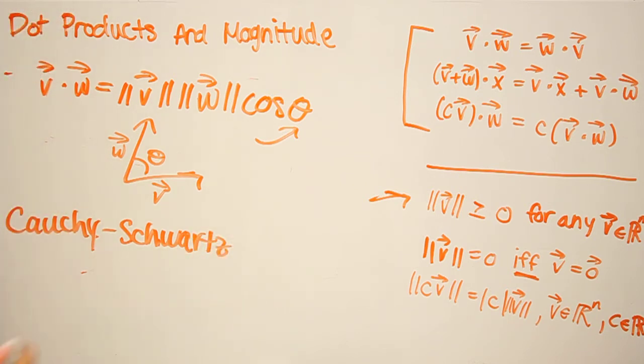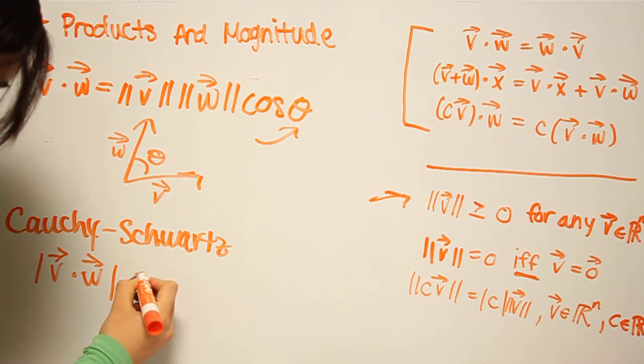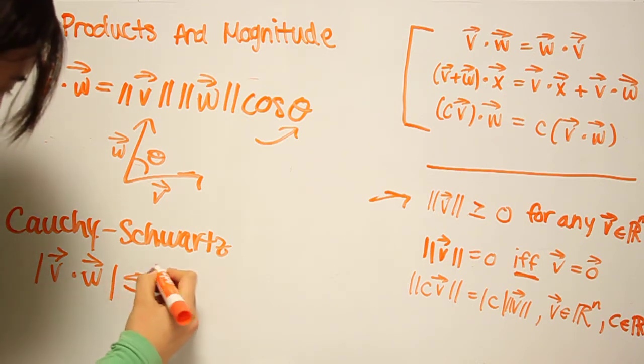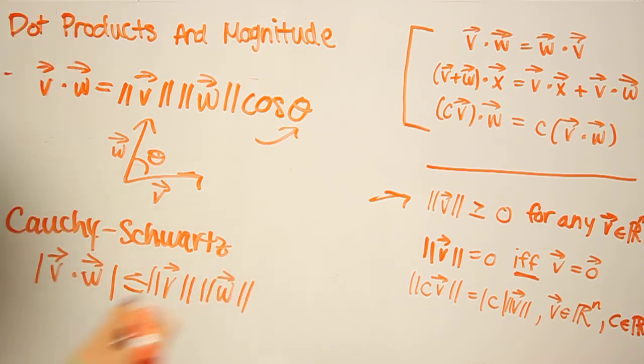So the Cauchy-Schwartz inequality states that the absolute value of the dot product of V and W is less than or equal to the magnitude of V times the magnitude of W. And we see that this makes sense because from this here,